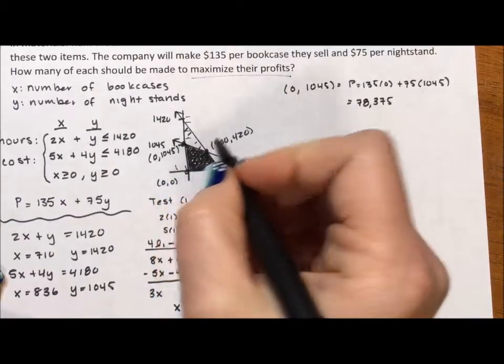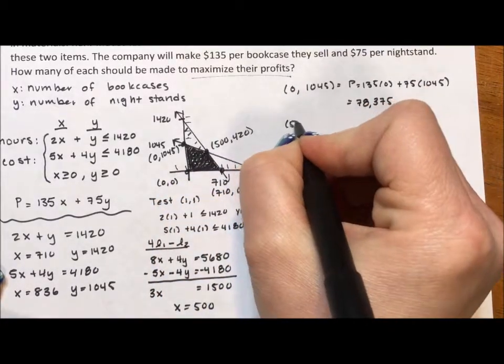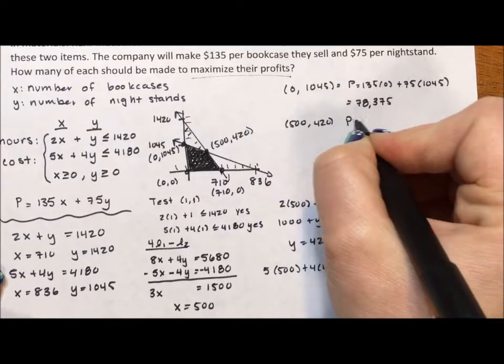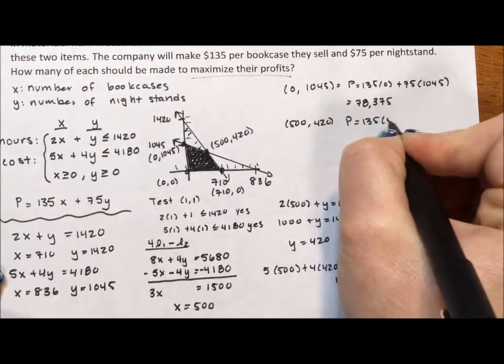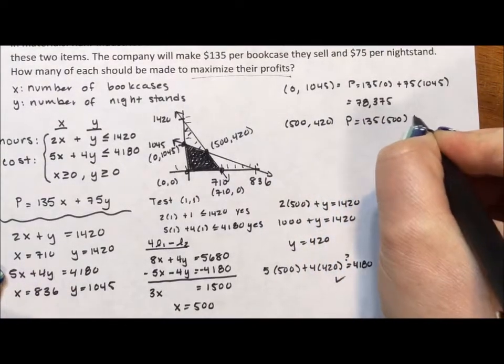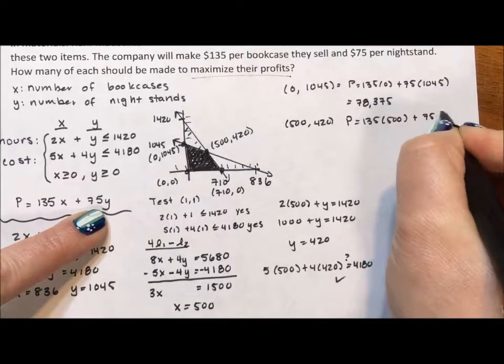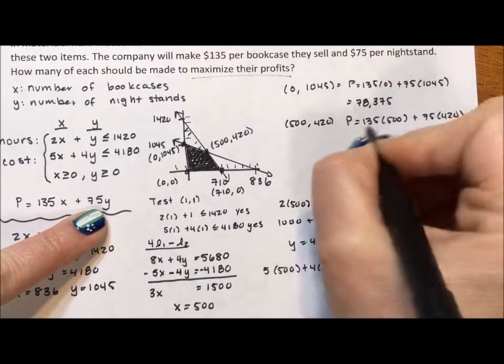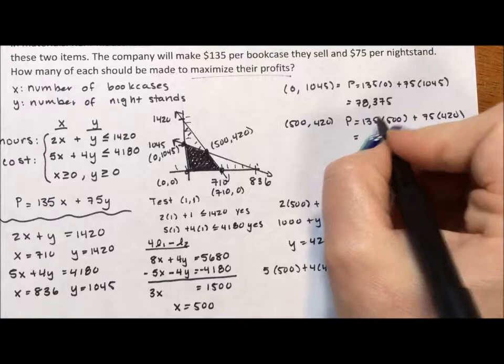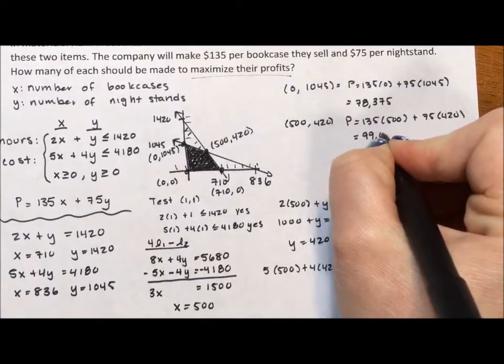Now I'm going to come around to my next one. 500, 420. So my profit is going to be $135 for each of those 500 bookcases plus $75 for each of those 420 nightstands. I throw that into my calculator and I get $99,000.